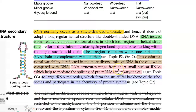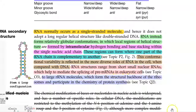RNA structures range from short small nuclear RNAs, which help to mediate the splicing of pre-mRNA in eukaryotic cells, to large rRNA molecules. This large rRNA molecule, as already mentioned, forms a structural backbone of the ribosome and participates in the process of protein synthesis.